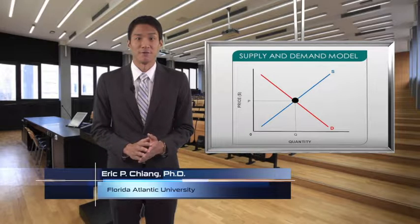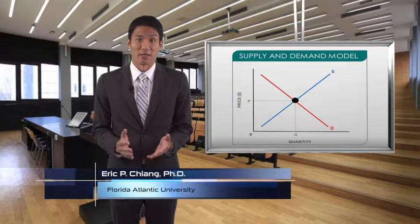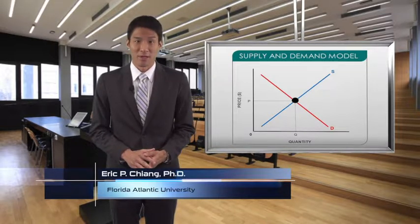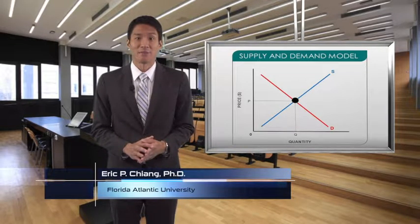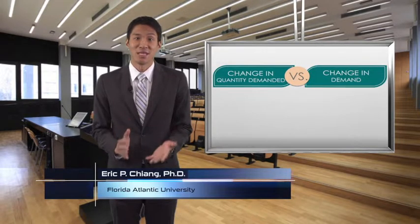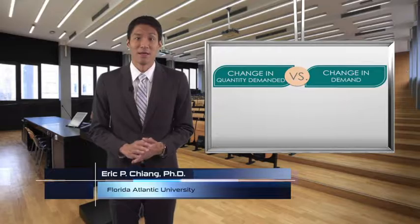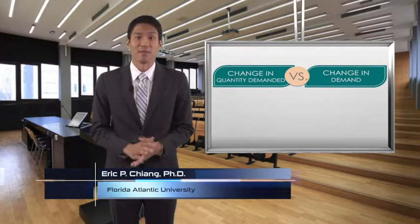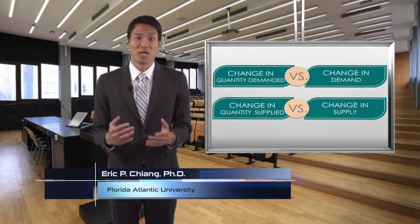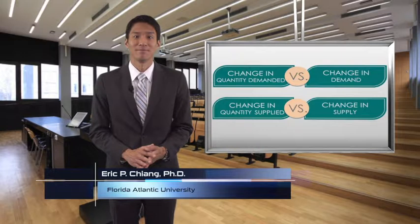Many different factors affect the equilibrium price and quantity. Some factors affect the demand curve, while others affect the supply curve. Before we look at these demand and supply factors, it's important to make a distinction between a change in quantity demanded and a change in demand, and similarly between a change in quantity supplied and a change in supply.